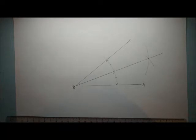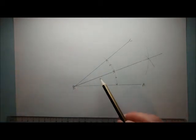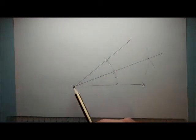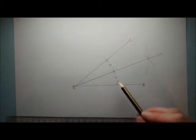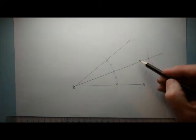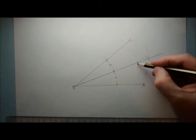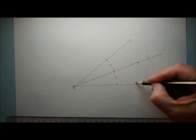This construction is very useful for locus questions where we need to construct a line that is always equidistant from BC and AB. This line is always the same distance from BC as it is from AB, no matter which point you look at.